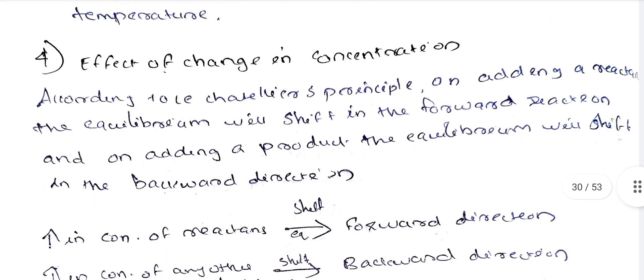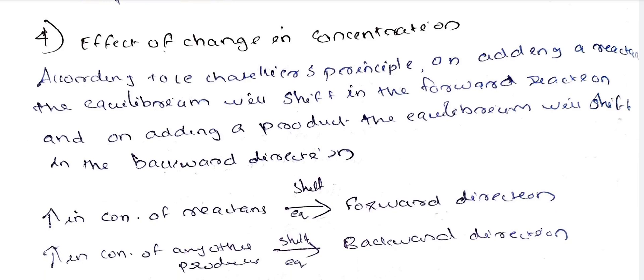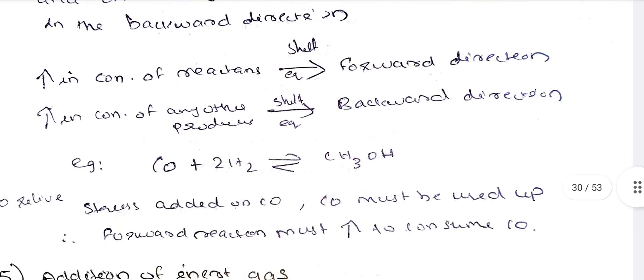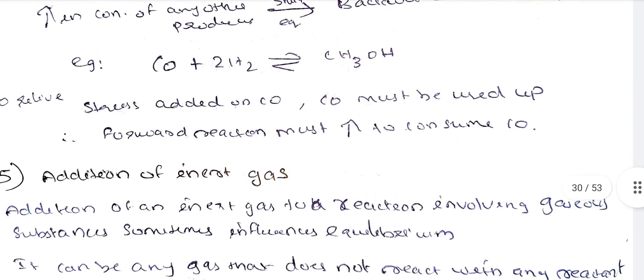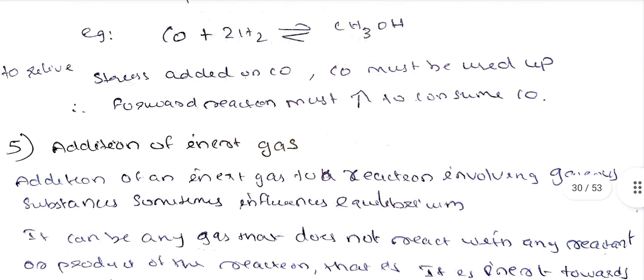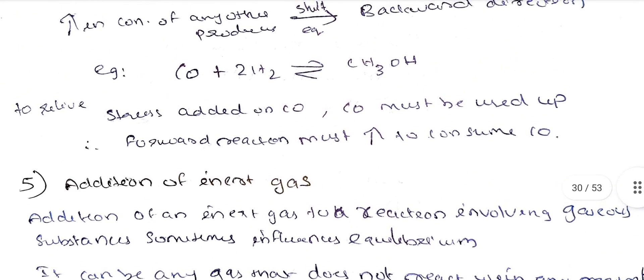Next is the effect of concentration. According to Le Chatelier's Principle, on adding a reactant, equilibrium will shift in the forward direction, and on adding a product, equilibrium will shift in the backward direction. For example, consider CO plus 2H2 giving CH3OH. If CO is added, more CH3OH will be formed.